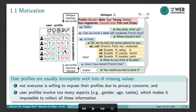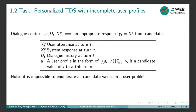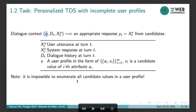Let's formulate our task as personalized task-oriented dialogue systems with incomplete user profiles. Given the dialogue context as input — which consists of a user profile, dialogue history, and the current user utterance — our goal is to select an appropriate response from the candidate set as output. Please note that here the user profile is an incomplete one, because it is impossible to enumerate all the candidate values in the user profile.